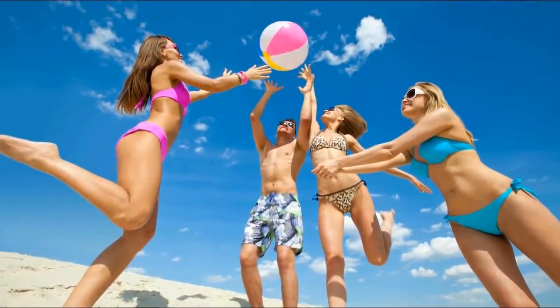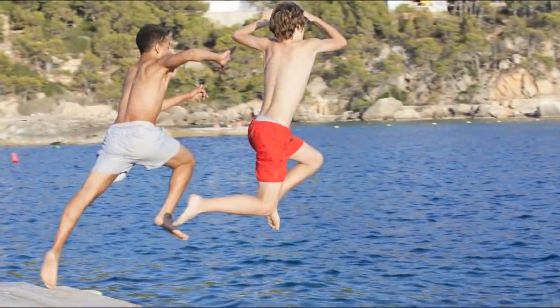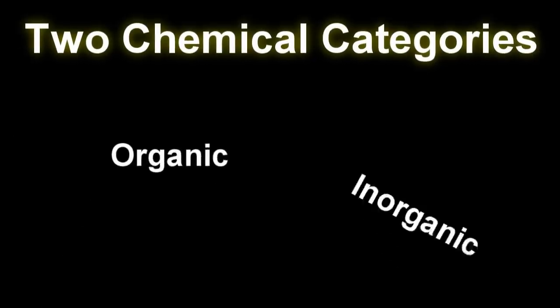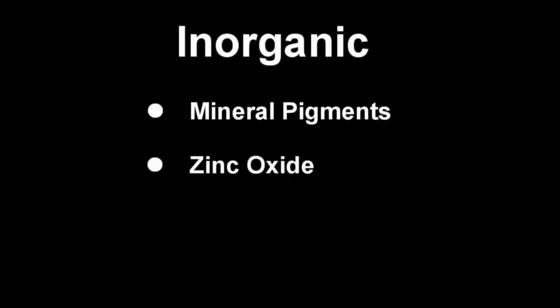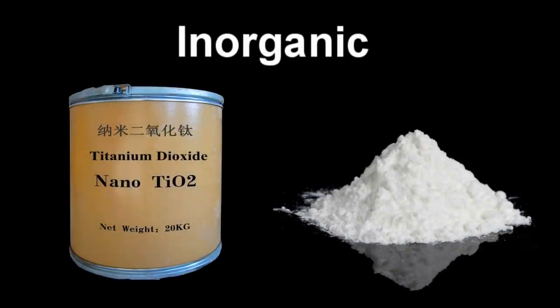However, for those of us that want to play on the beach or jump in the water, covering ourselves with heavy ultraviolet blocking clothing is probably not an option. Liquid, cream, or spray sunscreen afford us the necessary UV protection without the restrictions of a physical barrier. These applied sunscreens come in two chemical formulations: organic and inorganic. The inorganic are simple mineral pigments like zinc oxide or titanium dioxide, which are bright white powders that can be emulsified into a cream or ointment.